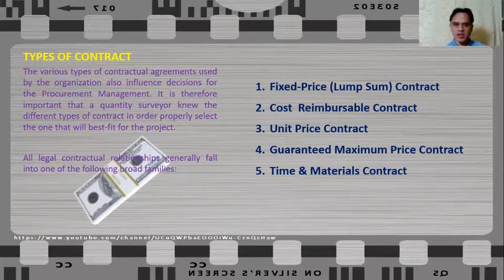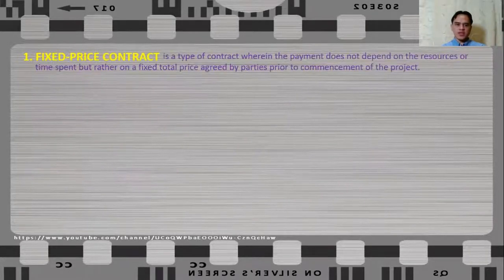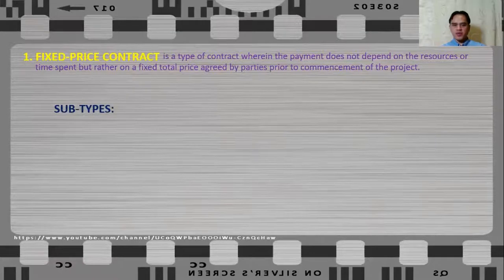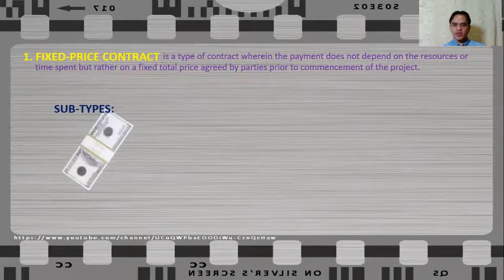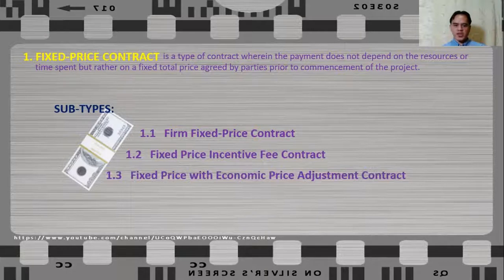Let us discuss in detail these types of contract. Fixed price contract is a type of contract wherein the payment does not depend on resources or time spent, but rather on a fixed total price agreed by the parties prior to commencement of the project. Fixed price contracts have the following subtypes based on the manner that the contractor is paid: firm fixed price contract, fixed price incentive fee contract, and fixed price with economic price adjustment contract.